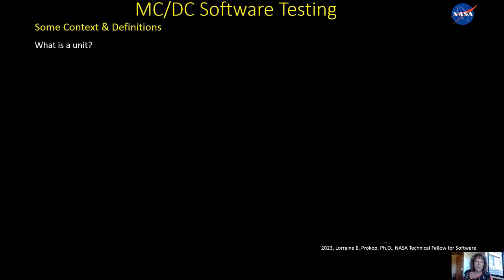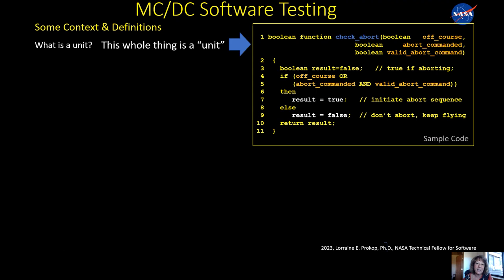Just some context and definitions. What is a unit? Here's the code we're going to go through. So this whole thing is a unit. It's a function or a method, and it's a snippet of code that stands on its own. This particular function, I'm calling it check_abort.